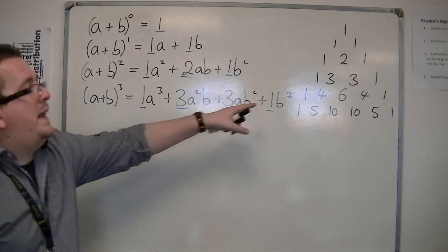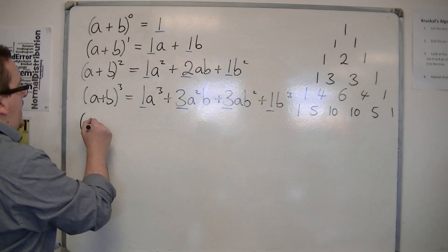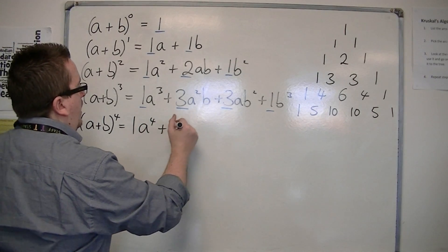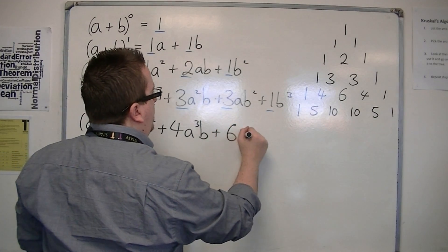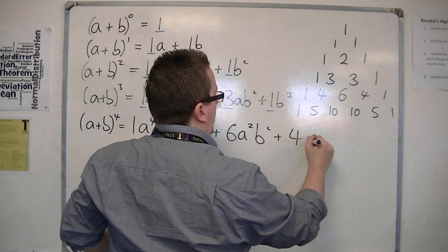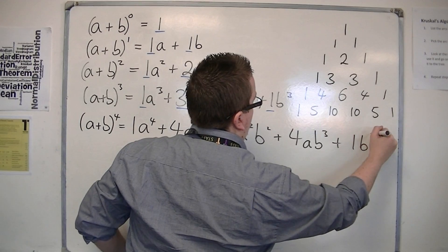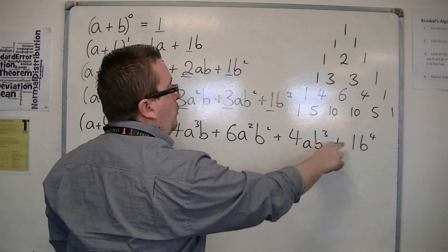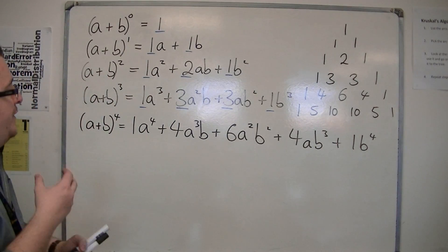(a+b)^4 is 1a^4 + 4a³b + 6a²b² + 4ab³ + 1b^4. So 1, 4, 6, 4, 1. And you should also be picking up the pattern that I'm using with the a's and the b's.